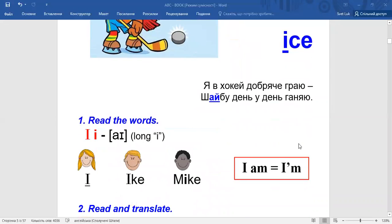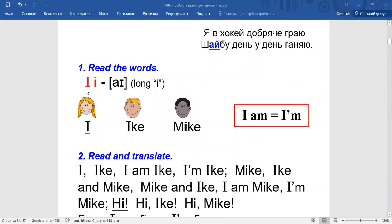Let's look at task one. Here is a long letter I, so we should read it like I. Listen to me and repeat. I. This girl may say, I am a girl. Look, I am a girl. Or she may say, I'm a girl. Short form, I'm a girl.